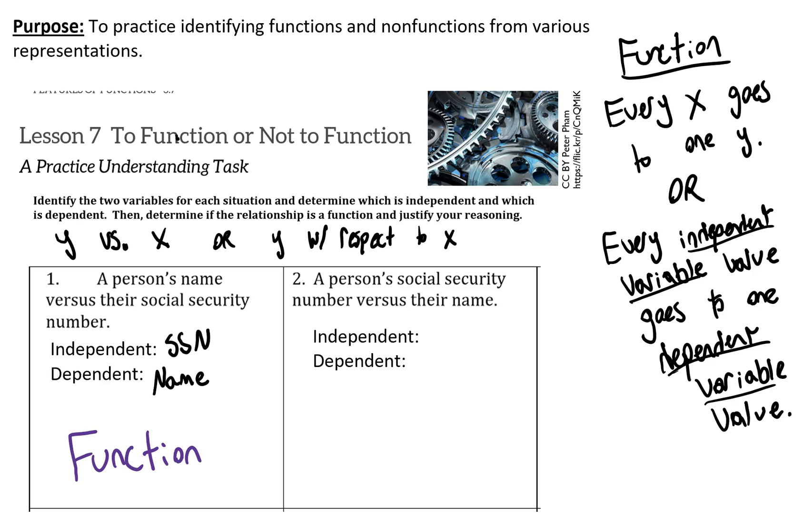On the other hand in problem two, if we switch it and we're talking about social security number versus name, social security number is now dependent and name is independent. So it's very possible that there are multiple people out there named John Smith and they will have distinct social security numbers.